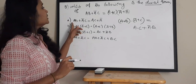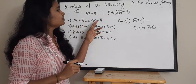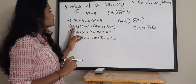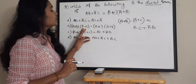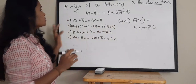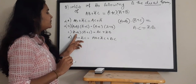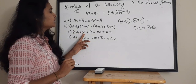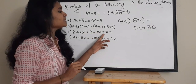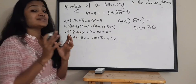Now what is the correct answer? Option A: AB plus A-bar C equals AC plus A-bar — no. Option B: A plus B into A-bar plus C equals A plus C into A-bar — wrong. Option C: A plus B into A-bar plus C equals AC plus A-bar B — which is the correct answer. So the correct answer for this question is option C.